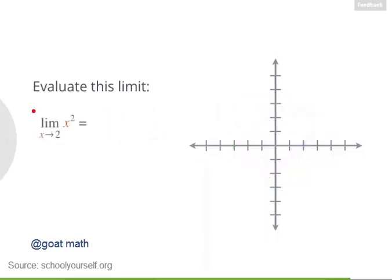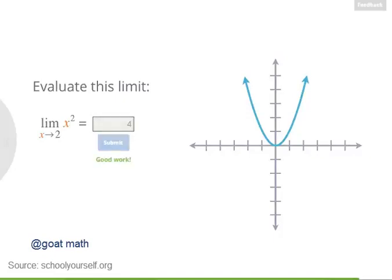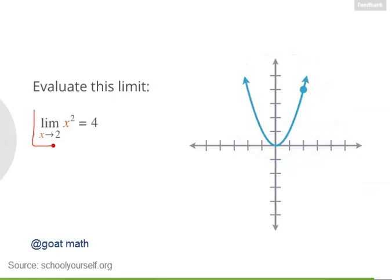Let's look at one more limit: the limit of x squared as x approaches 2. Here's a graph of x squared — there are no holes or discontinuities. As x gets really, really close to 2, x squared gets really, really close to 4. It so happens that x squared equals 4 when x equals 2, but this limit statement isn't saying anything about what x squared actually equals when x equals exactly 2. It's just saying that as x gets closer and closer to 2, x squared gets closer and closer to 4.